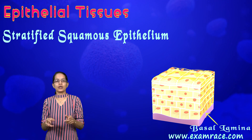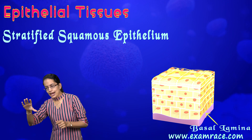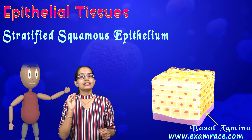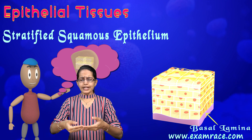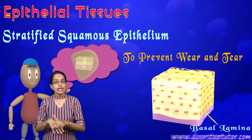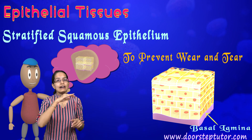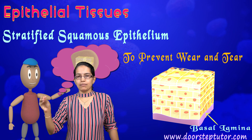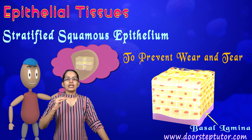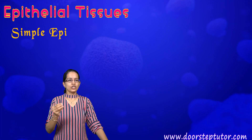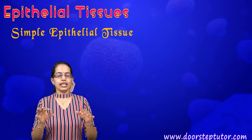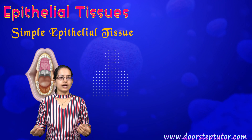The next type is stratified squamous epithelium, which is a layer arranged in a pattern. A good example is skin. The idea is to prevent any kind of wear and tear. In contrast, simple squamous epithelium examples include the mouth lining, esophagus, and lung alveoli.